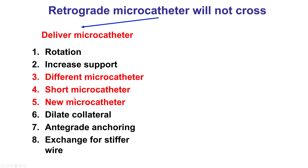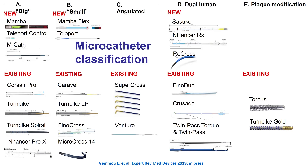The next option is to change the microcatheter — either get a different one, or get a shorter one (135 instead of 150 centimeter), or get a new one, even the same kind as the one you have been using before.